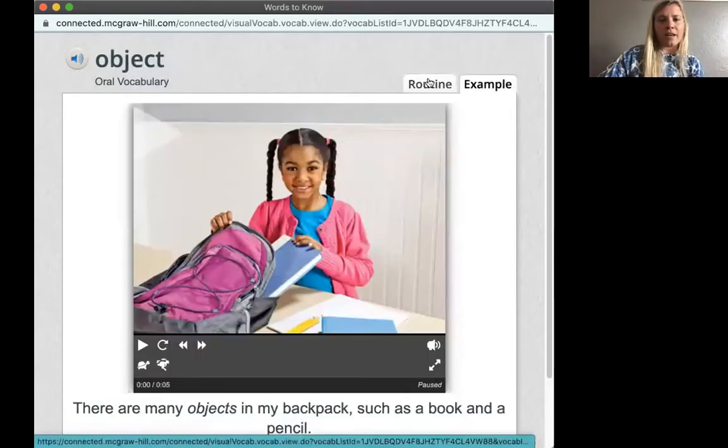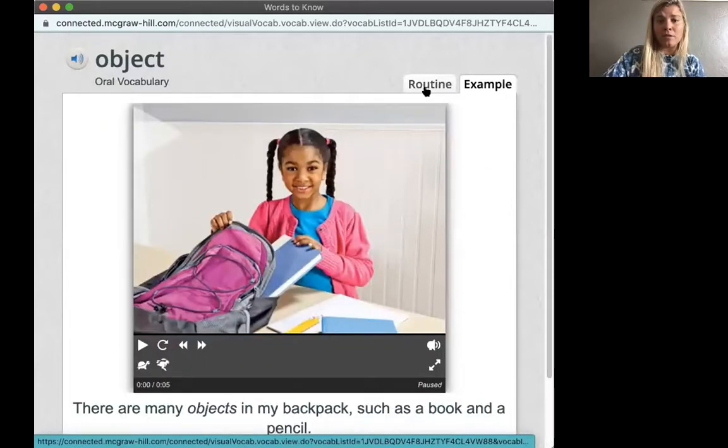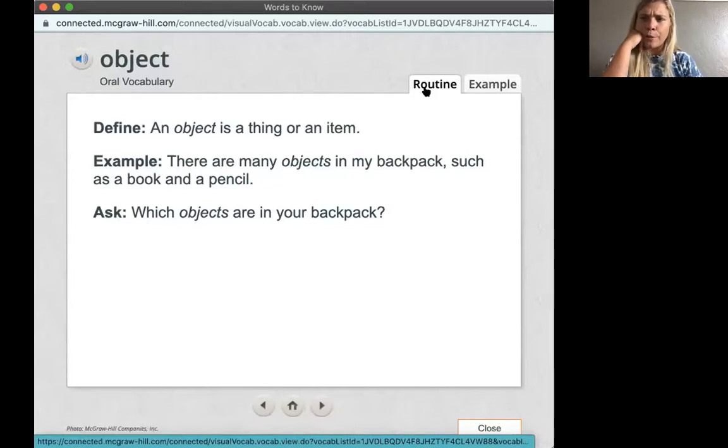My next one is object. An object is a thing or an item. My dry erase marker is an object. It's a thing or an item. There are many objects in a backpack, such as a book and a pencil. What objects could be in your backpack? You could have some paper, a colored piece of paper, or you might have a pencil or pens or erasers. You might even have your lunchbox.